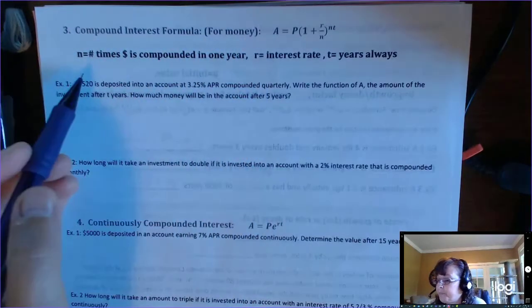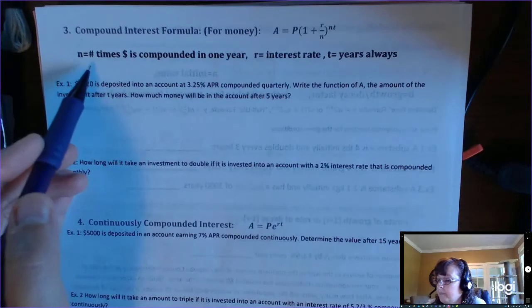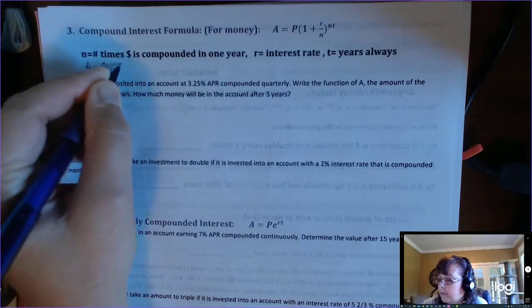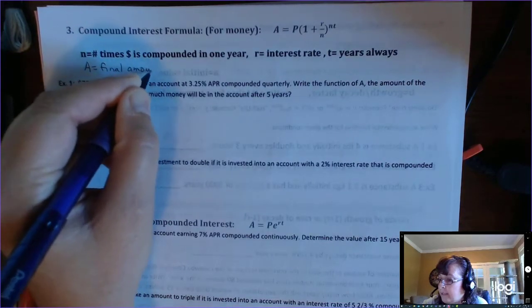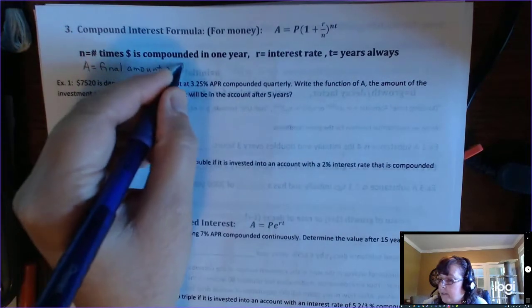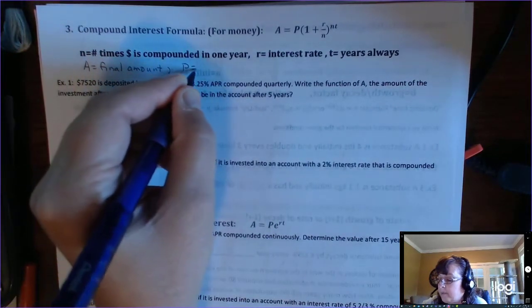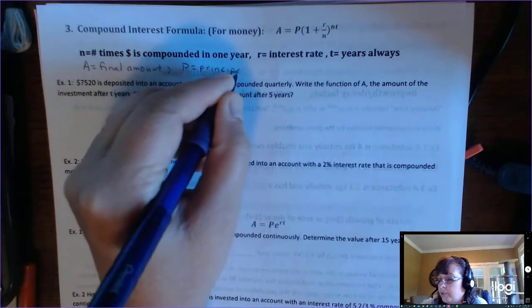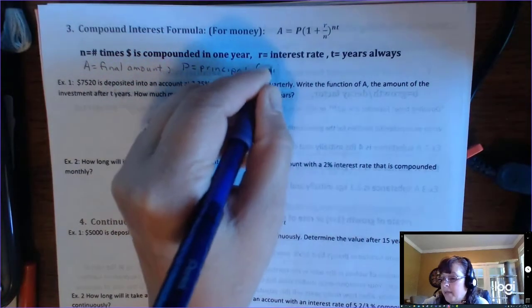So A is going to be the final amount. That's the output. P is your initial amount. It's P because it stands for principal, which is the initial amount of money that you have.